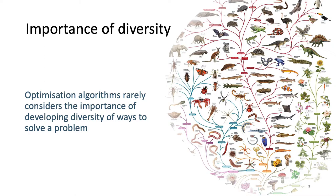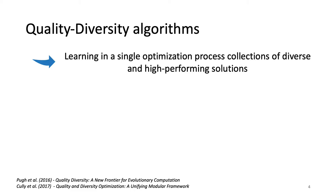If you take the example of natural evolution, it didn't find a unique fixed solution to solve the global problem of surviving on earth, but a lot of them, as diverse as possibly feasible, and this allows life to survive multiple extinctions and drastic environmental changes, but also to develop more and more complex organisms. Quality diversity algorithms make use of this idea by learning in a single optimization process a collection of diverse and high-performing solutions.